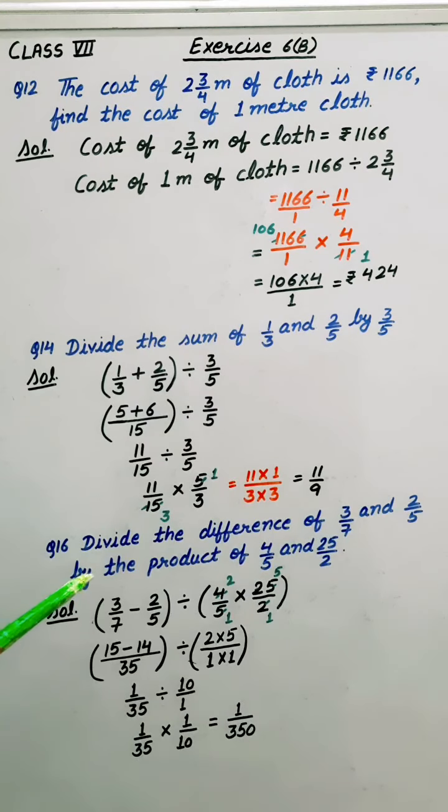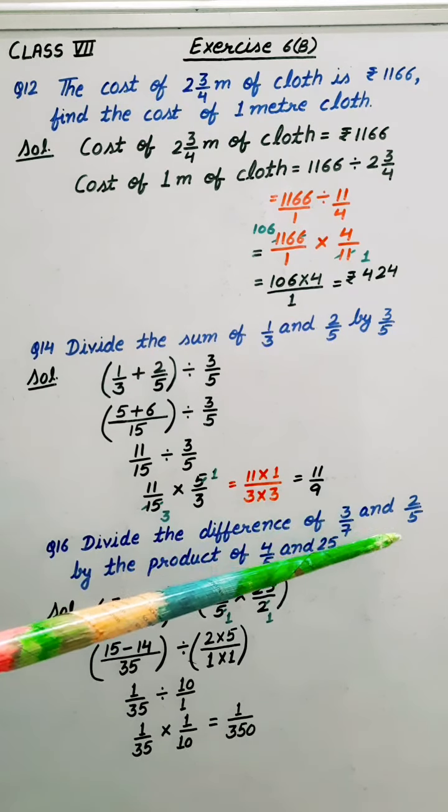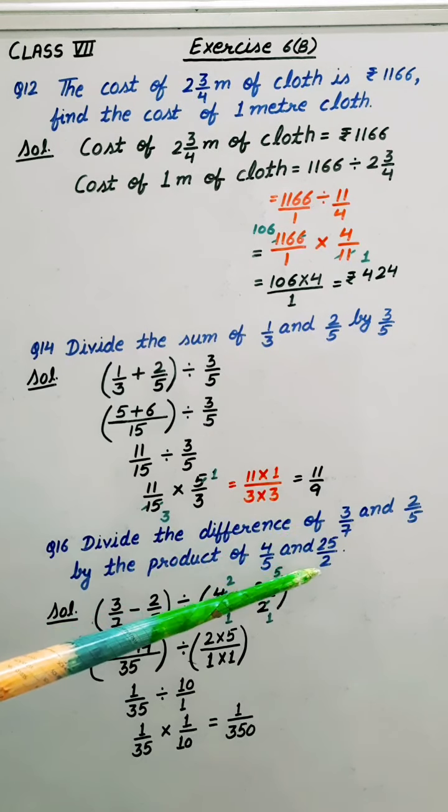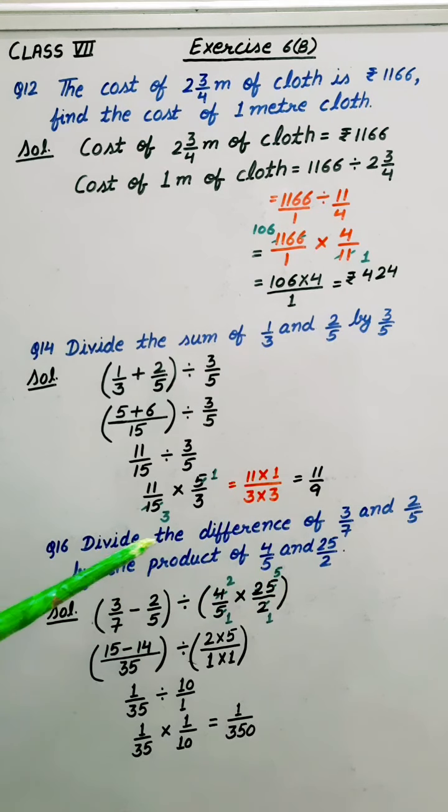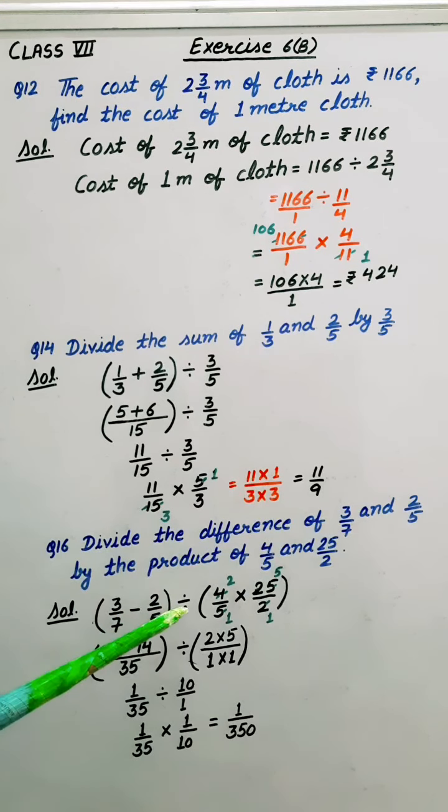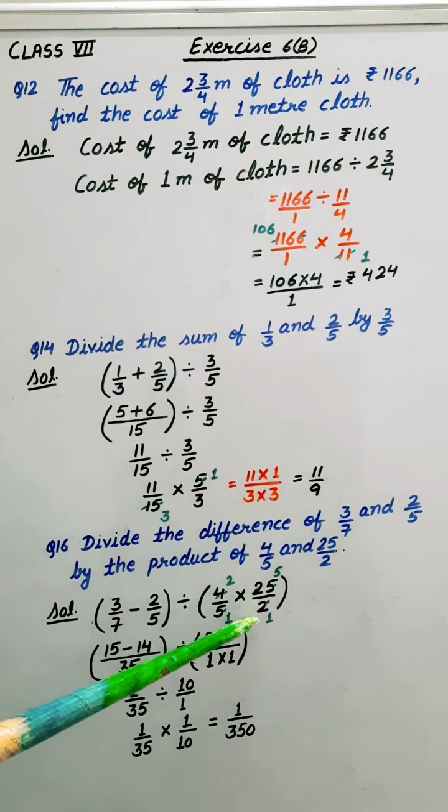Now question number 16. Divide the difference of 3 by 7 and 2 by 5 by the product of 4 by 5 and 25 by 2. So first we have to write the difference of these two rational numbers divided by product of 4 by 5 and 25 by 2.